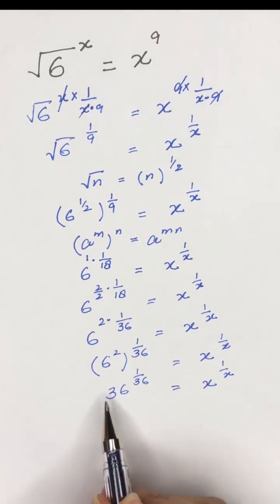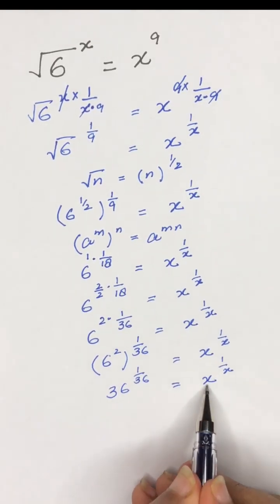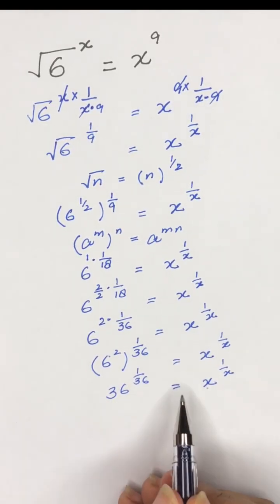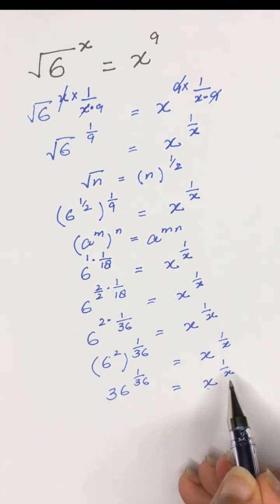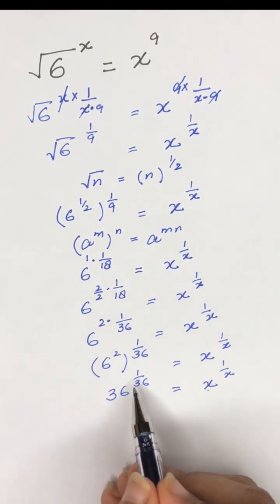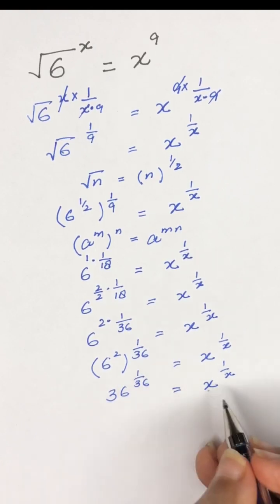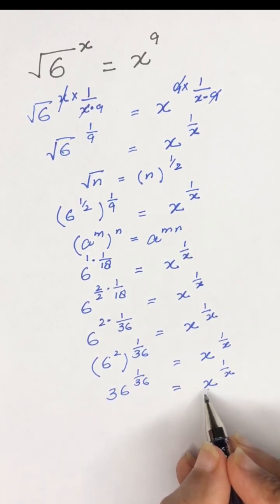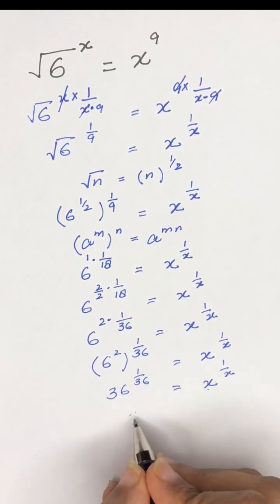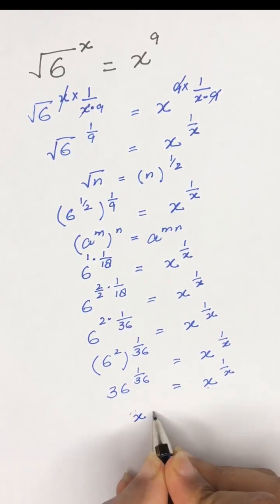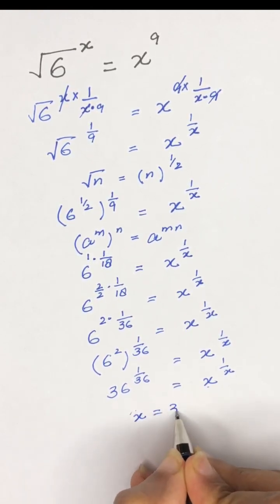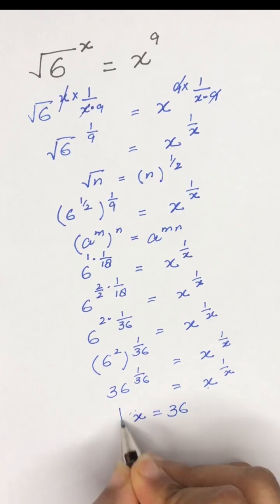Now if we equate both sides, x will be equal to 36, and 1 divided by x is equal to 1 divided by 36. It means the value of x is equal to 36. Thanks for watching.